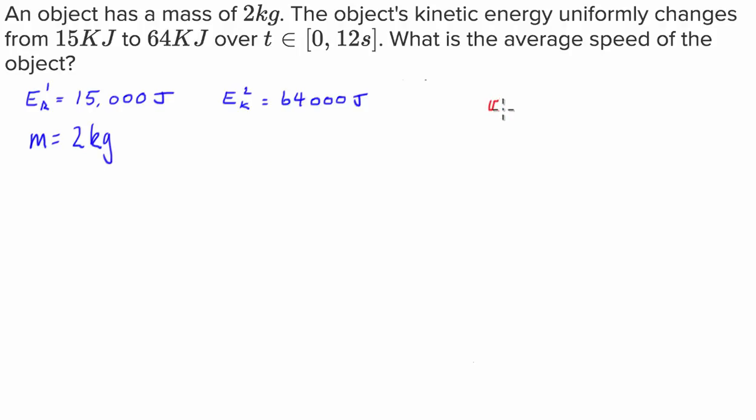So the velocity average is going to be the final velocity plus the initial velocity divided by 2. So that's how we're going to work out our average.